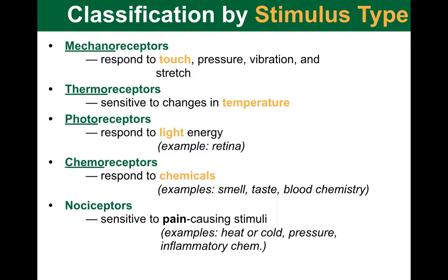Next, I want to talk about chemoreceptors. The word chemo refers to chemicals. These receptors are varied but all work on senses involving some sort of chemical changes that we might want to detect — like smell, which involves small odor-causing particles taken into your sensory organ, or taste. These are vital for survival, for example to detect what food is suitable for eating. We also have blood chemistry that we want to monitor, such as blood pH, which must be kept within a very narrow range in humans.